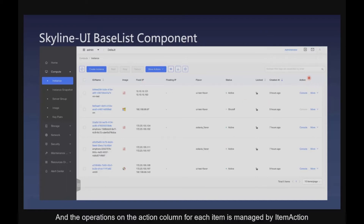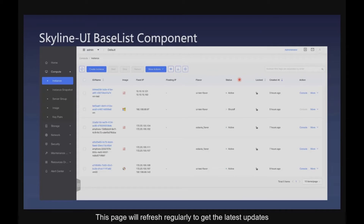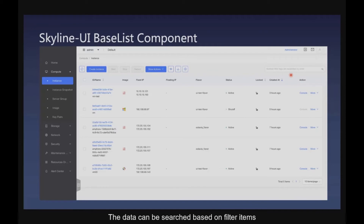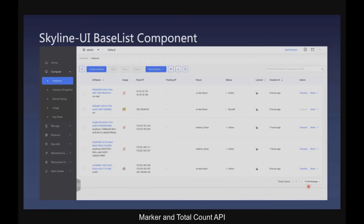The operations on the action column for each item are managed by item action. This page will refresh regularly to get the latest updates, and you can also click this button to stop the automatic refresh. The data can be searched based on filter items. In this page, back-end pagination is supported, achieved by limit, marker, and total count API. When users interact with this page, the page will automatically refresh.